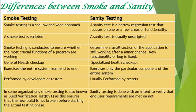Smoke testing is scripted — either using a written set of tests or using automation tests. Sanity testing is usually unscripted. The main purpose of smoke testing is to make sure whether the crucial functions of a program are working. In sanity testing, whenever a new functionality or a bug is introduced in the application, we check whether the small section of the application is working fine even after those minor changes.